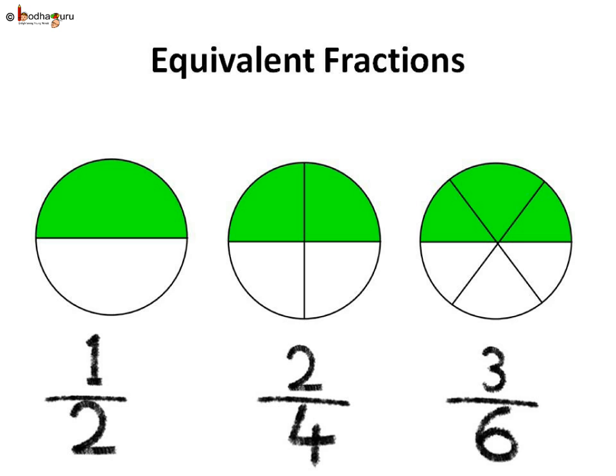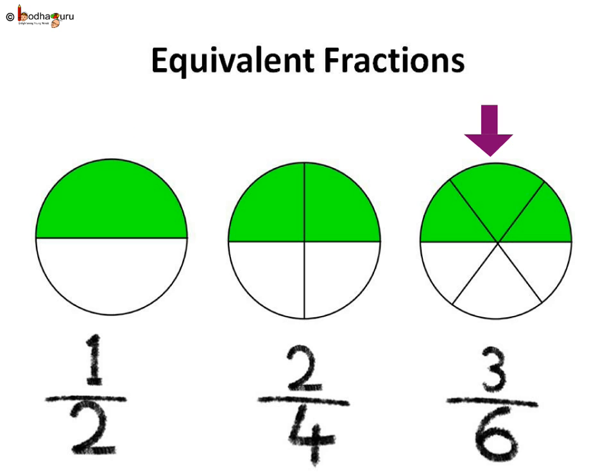What do we see? They all show basically the same thing — they all are a half of a whole. Just look at the picture; they are seen to be equal. These fractions — one by two, two by four, and three by six — are called equivalent fractions as they represent the same value.